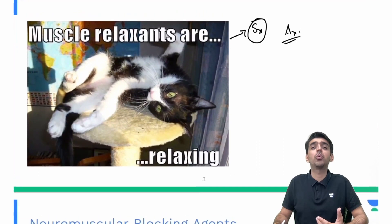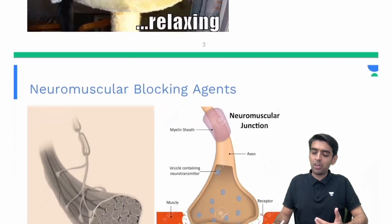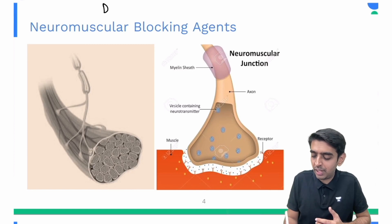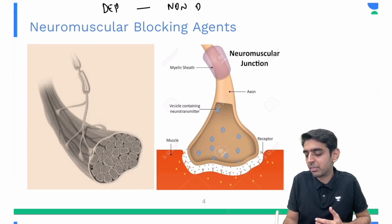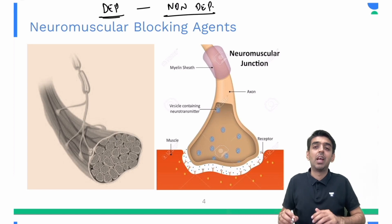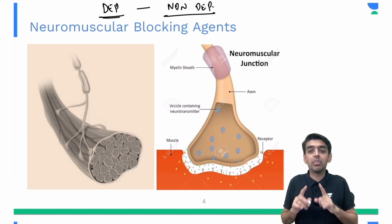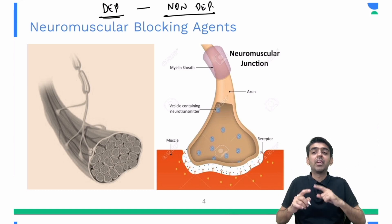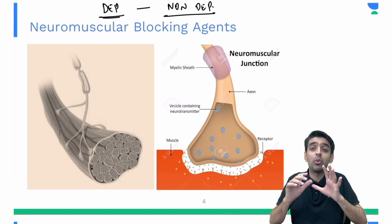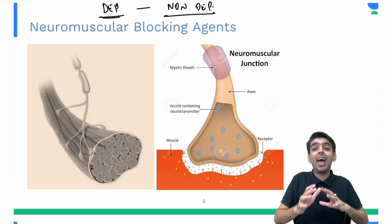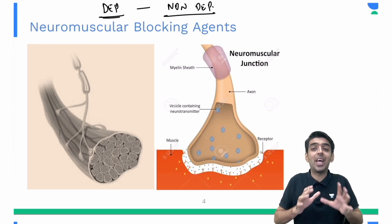How do we classify neuromuscular blockers? Broadly speaking, they are classified as depolarizing and non-depolarizing muscle relaxants. We will look into the details of classification shortly, but first we need to understand what depolarizing and non-depolarizing mean and how they act.